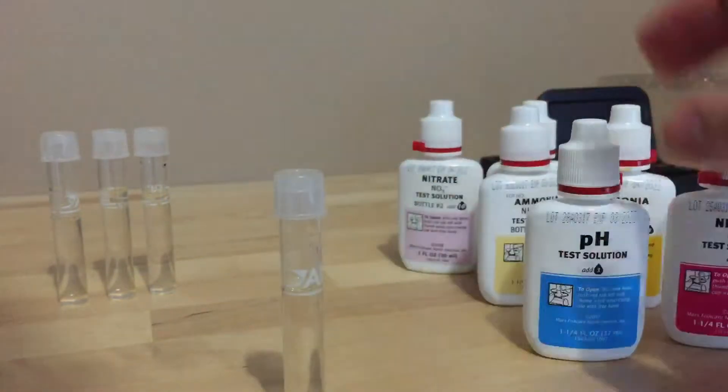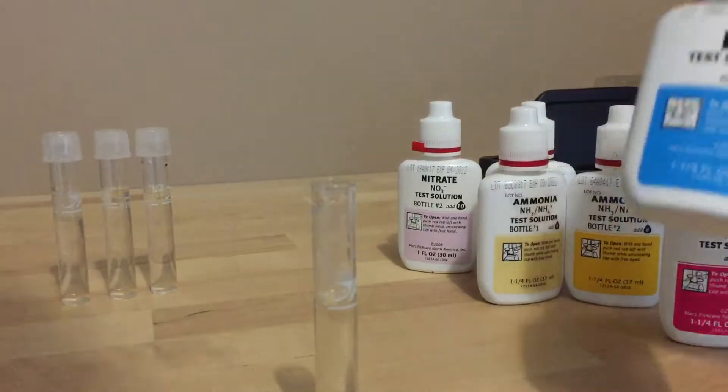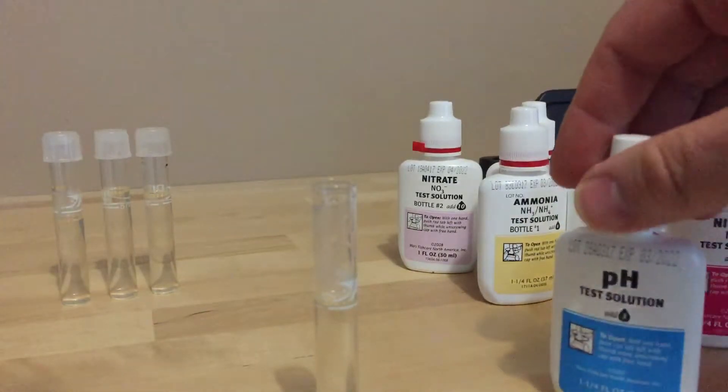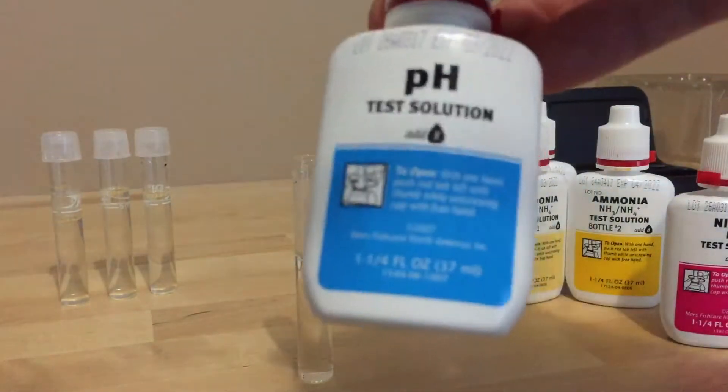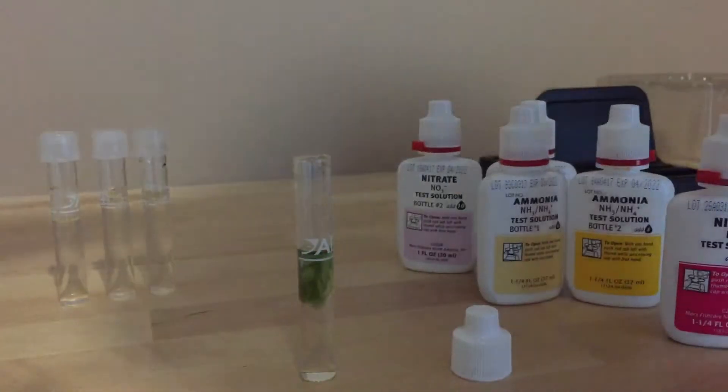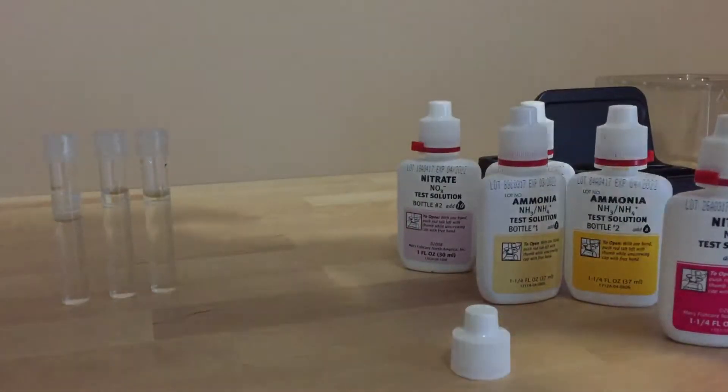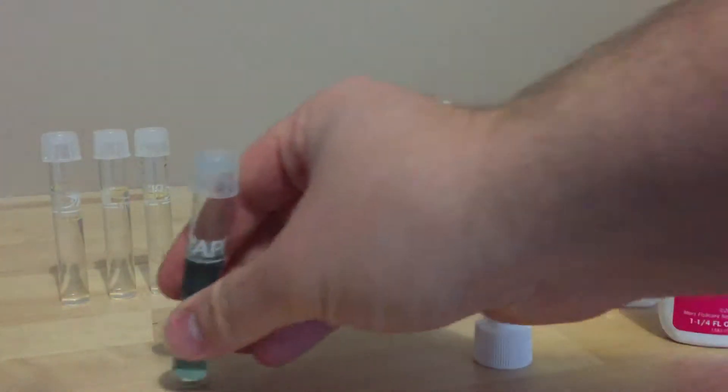So the first one is pH. If I just take the top off, there's a detailed book that comes with it to tell you how to do each test but also as a handy reminder on the bottle as well. For pH it just says add three drops. It's as simple as that. Just add three drops, put the cap on, just give it a quick shake and then you can just leave that.